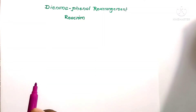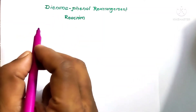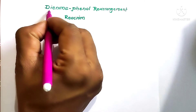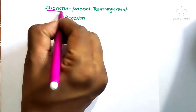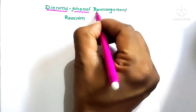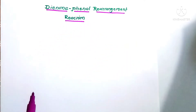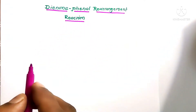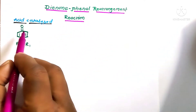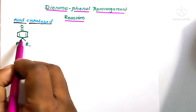Today we are going to discuss the dienone-phenol rearrangement reaction. This is an acid-catalyzed rearrangement reaction in which there is use of 4,4-disubstituted cyclohexadienone as the substrate.